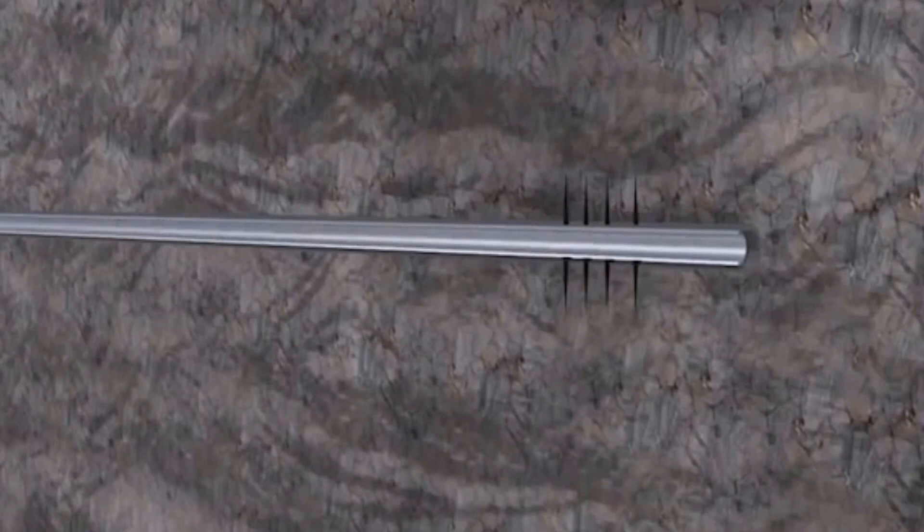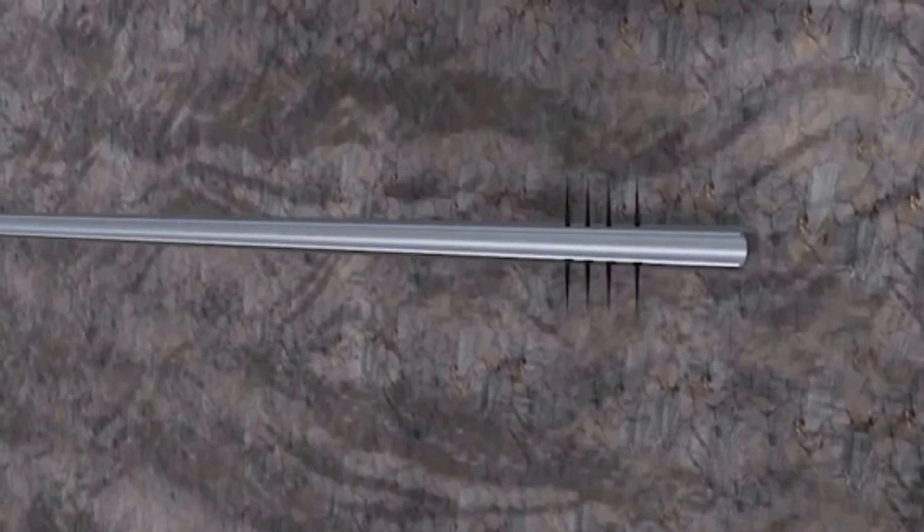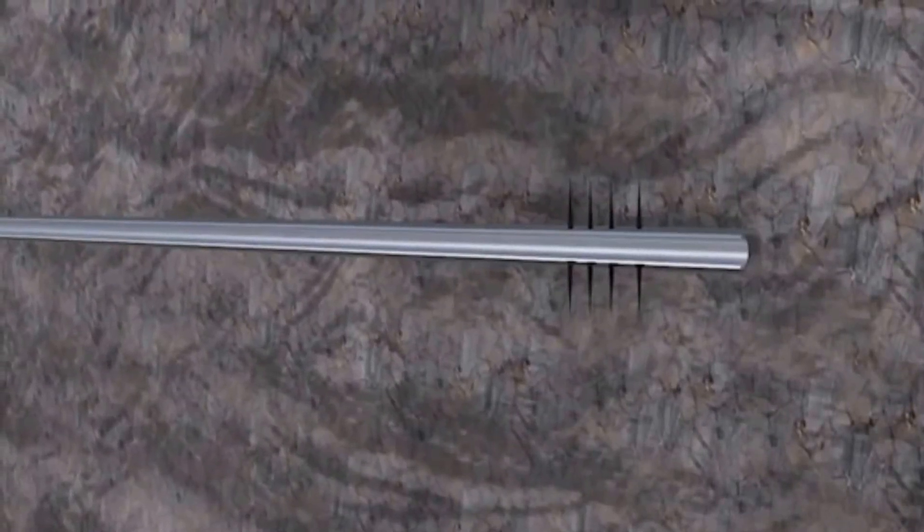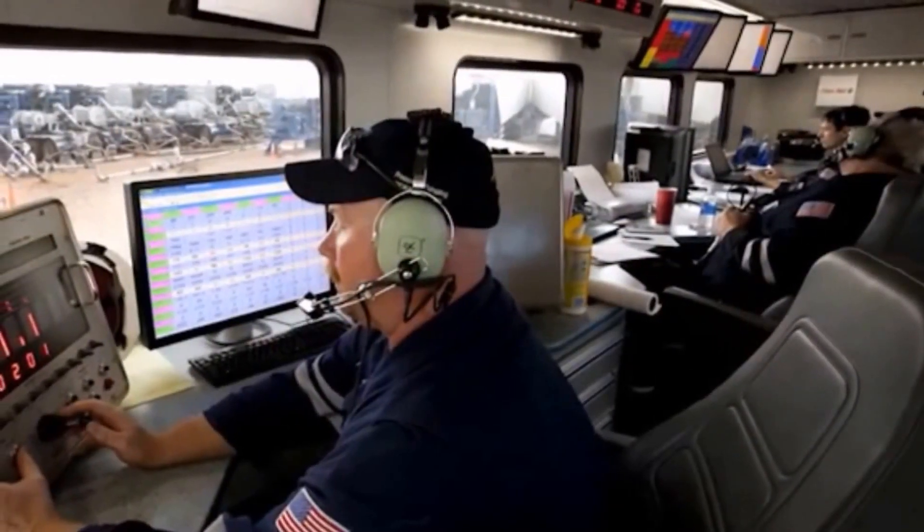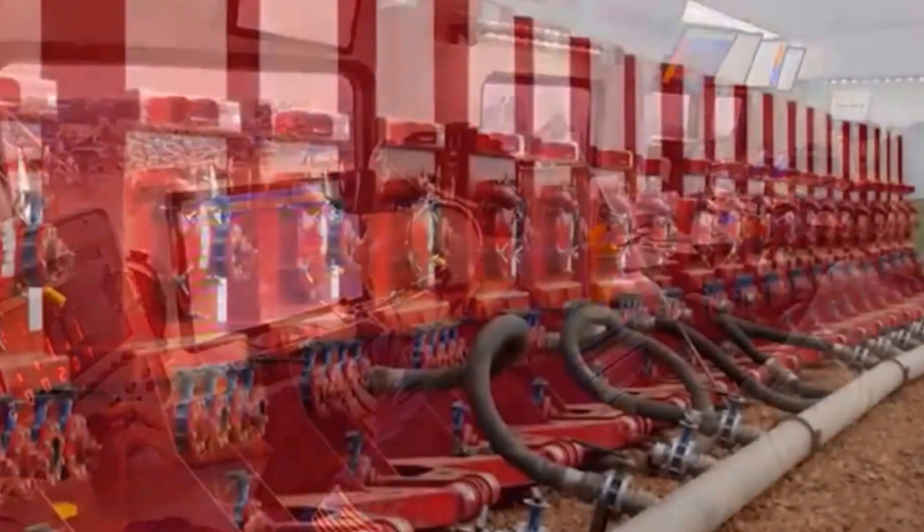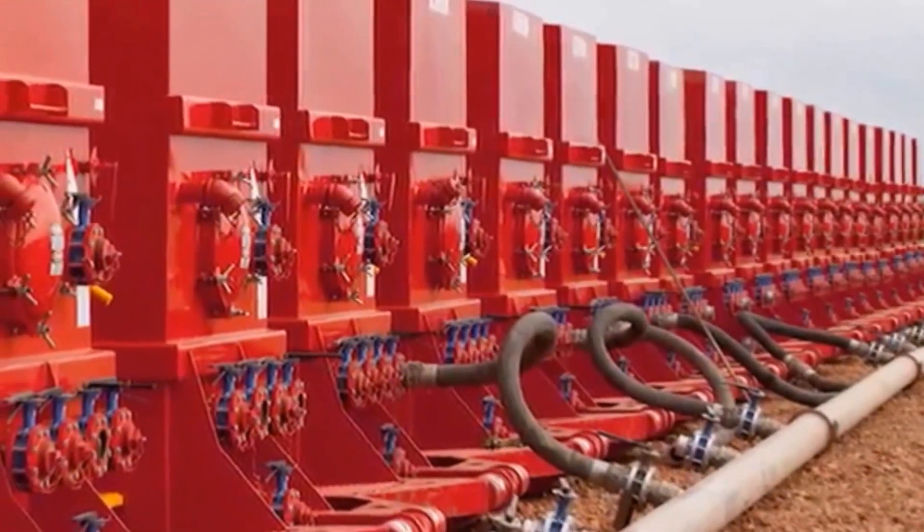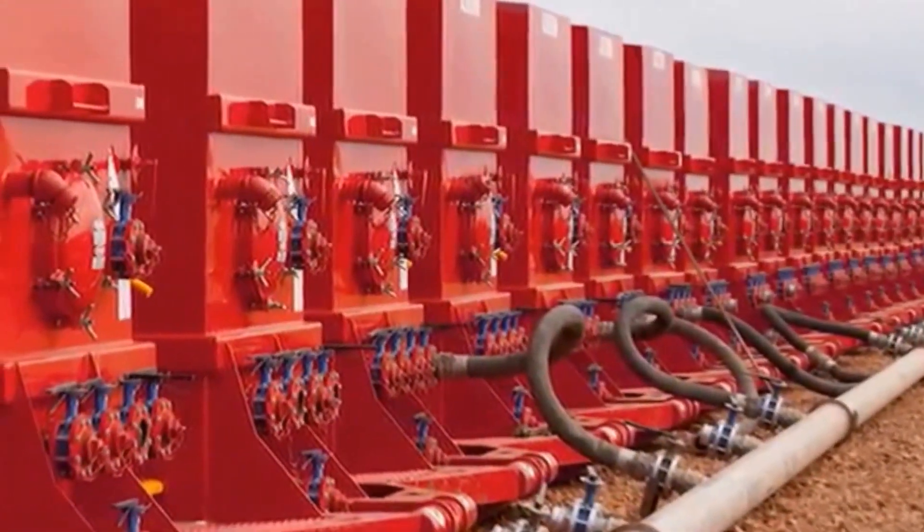The perforation gun is then removed in preparation for the next step, hydraulic fracturing. The process consists of pumping a mixture of mostly water and sand, plus a few chemicals, under controlled conditions into deep underground reservoir formations.